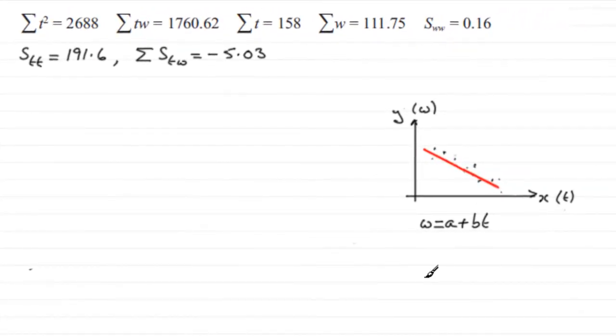Now for this part we've got to find the equation of the regression line of w on t in the form w equals a plus bt.